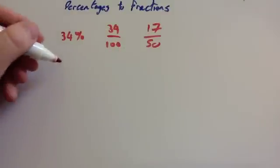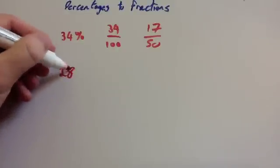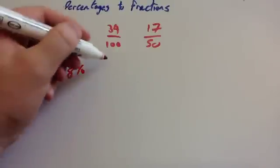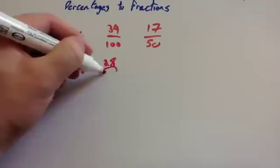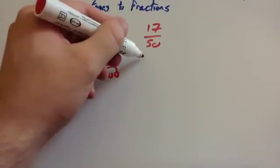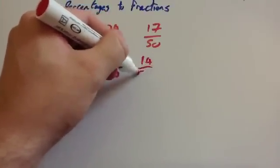Let's look at another example. Let's look at 28% this time. Well, 28% would be 28 over 100. Divide both of them by 2, you get 14 over 50.